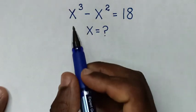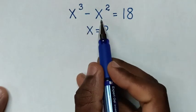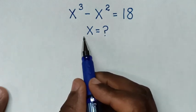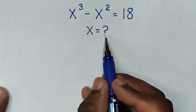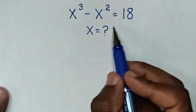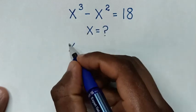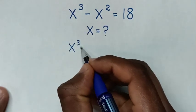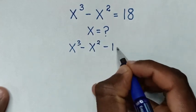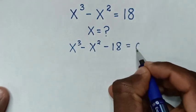Hello! How to solve x³ minus x² is equal to 18, to find the values of x from this equation. So first we take this 18 to the left side, so it will be x³ minus x² minus 18 is equal to 0.